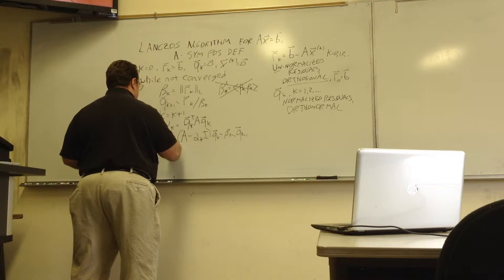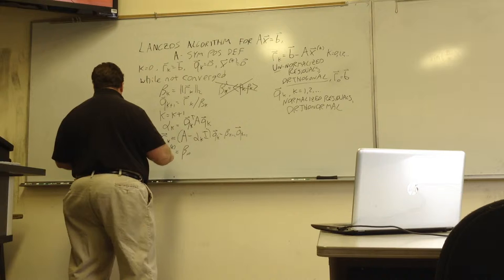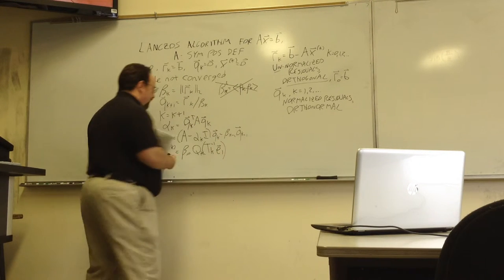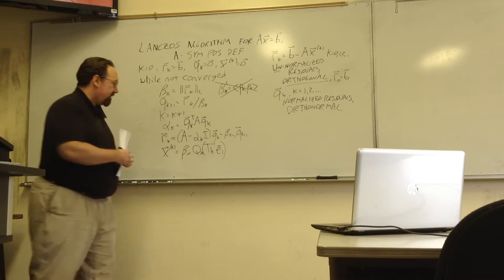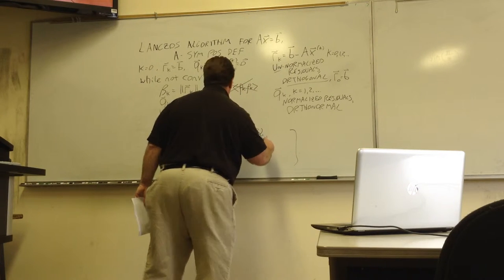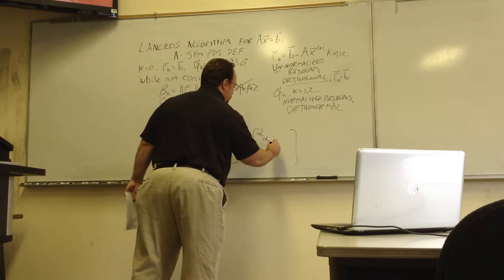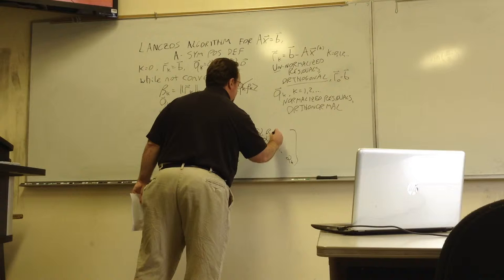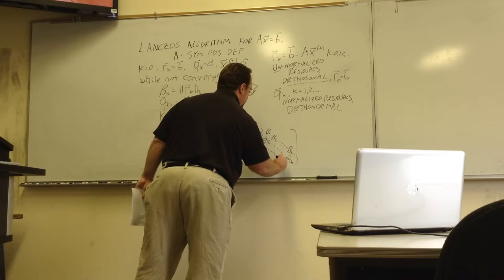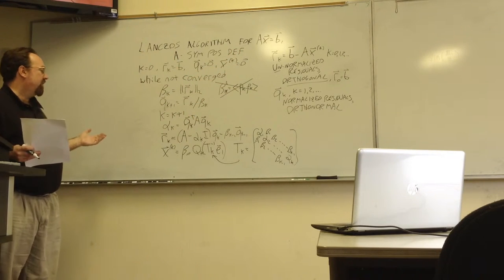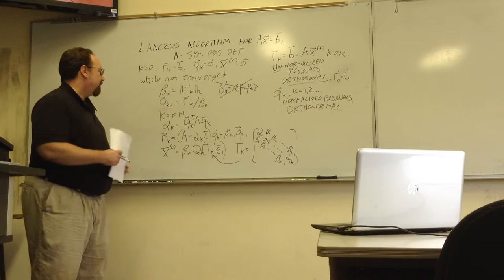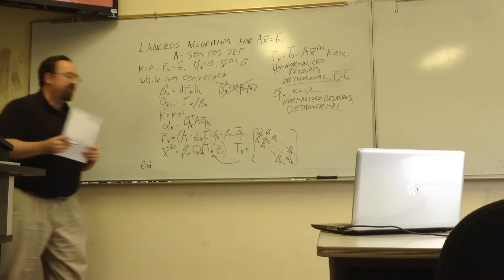Then I have our latest solution is beta naught, which is just the norm, the 2 norm of B, times QK TK inverse E1. This vector here in parentheses, we're solving a system because the matrix TK has these coefficients that we're computing, the alphas and the betas, that fill this matrix. So TK is K by K. It is symmetric. It is tri-diagonal. And it is also positive definite. To solve AX equals B, where A can be a large matrix, we're actually solving at each step a small system. It starts out just being one by one. It just keeps growing. But the idea is, hopefully, after not too many iterations, we will have converged to a reasonably accurate solution.